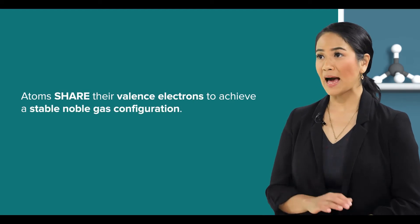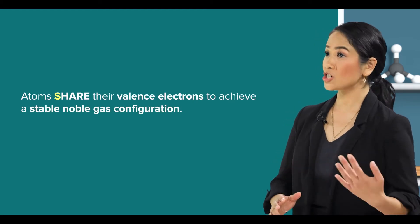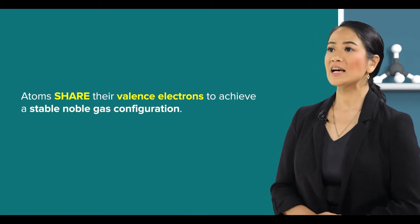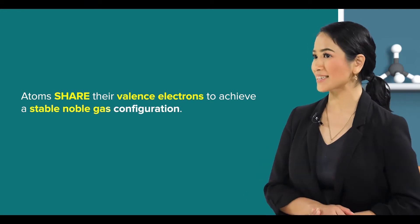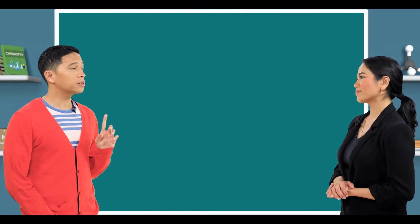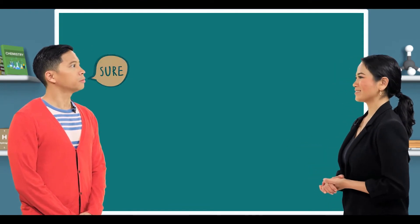Good for you. Do you also remember that some atoms also share their valence electrons to achieve a stable noble gas configuration? Sharing of valence electrons to achieve a stable noble gas configuration — that's called covalent bond, right? Yes, very good. Can you tell me what you remember about covalent bonding? Sure.